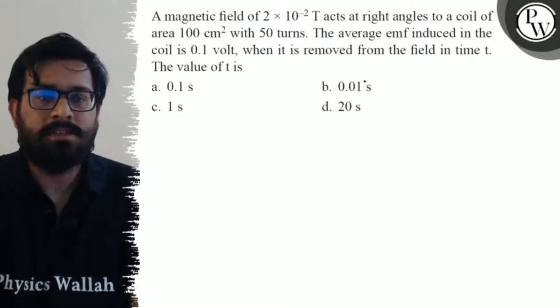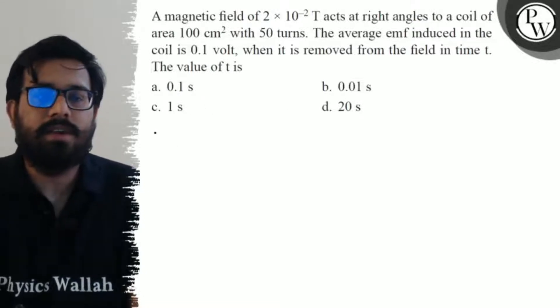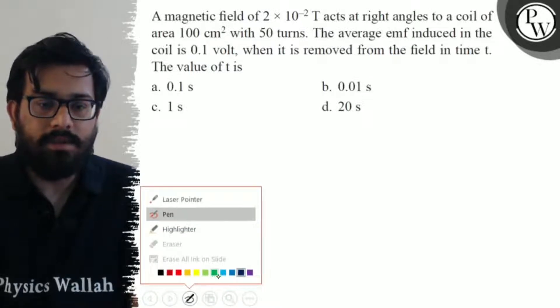First option is 0.1 second, second option is 0.01 second, third option is 1 second, and fourth option is 20 seconds. So first of all, let's see the given data.